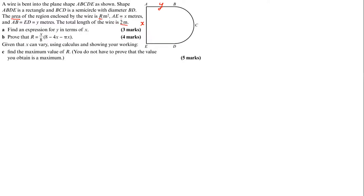So you'll need a formula for area and a formula for perimeter. Before I do anything here, I notice that if this length is x, I'm going to need the area of a semicircle, so I need a radius. If x is the diameter, that means my radius is going to be x over 2. I'll pop that down so I have that dimension ready for the next steps.